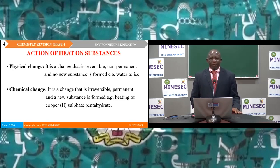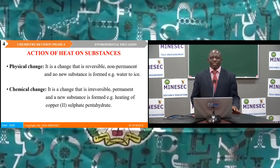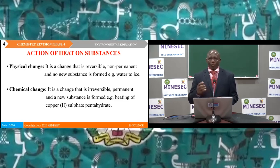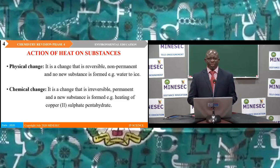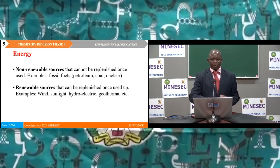Action of heat on substances. We have seen physical and chemical changes, whereby a physical change is reversible and non-permanent, and no new substance is formed. A chemical change is irreversible, permanent, and a new substance is formed — for example, the heating of copper sulfate pentahydrate.